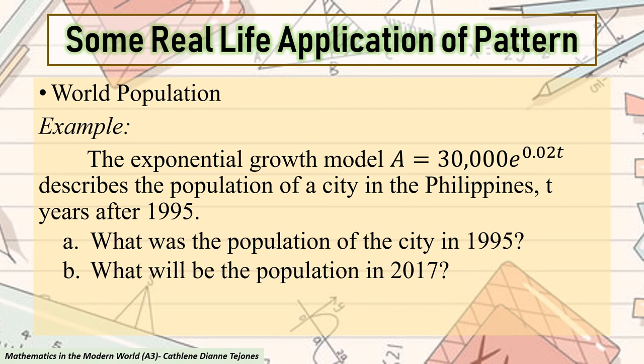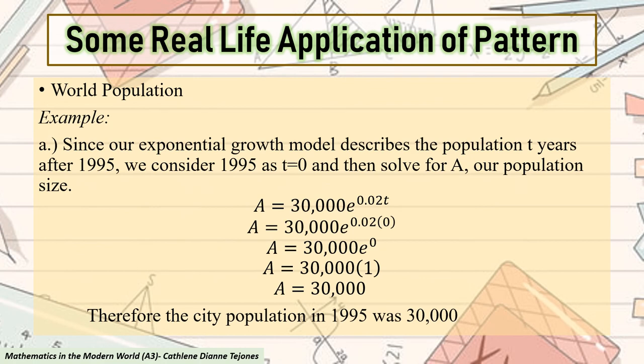So, let us have an example. The exponential growth model, A = 30,000e^(0.02T), describes the population of a city in the Philippines T years after 1995. We have two questions here. The first one is, what was the population of the city in 1995? And letter B, what will be the population in 2017?